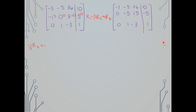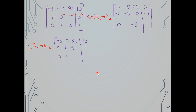I take negative one-fifth of row 2 and put it back in row 2, because every number in row 2 is divisible by negative 5 — this makes the row easier to work with. Row 1 stays the same. Row 2 divided by negative 5 gives 0, 1, negative 3, 1. Notice row 3 is also 0, 1, negative 3, 1 — row 2 and row 3 are now identical.